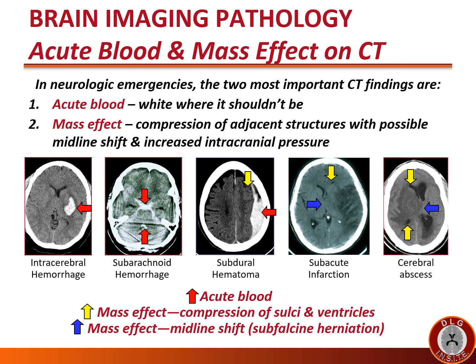In neurologic emergencies, the two most important findings on CT scan of the brain are acute blood and mass effect. Acute blood appears as white where it shouldn't be. Mass effect is compression of adjacent structures with possible midline shift and increased intracranial pressure. In the images on this slide, the red arrows point to acute blood, the yellow arrows point to mass effect manifested by compression of sulci and ventricles, and the blue arrows point to mass effect manifested by midline shift, also called sub-falcine herniation.